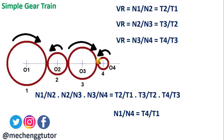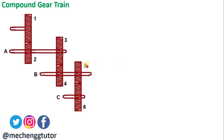In a compound gear train, there is more than one gear on a shaft. Gear 1 is the driver gear; gears 2 and 3 are mounted on the single shaft A; gears 4 and 5 are mounted on shaft B; and gear 6 is mounted on shaft C. Gears 3 and 5 act as driver gears for gears 4 and 6 respectively, because no other gear meshes with gear 3 or gear 5 to make them move — they have independent motion transmitted through their shared shafts.